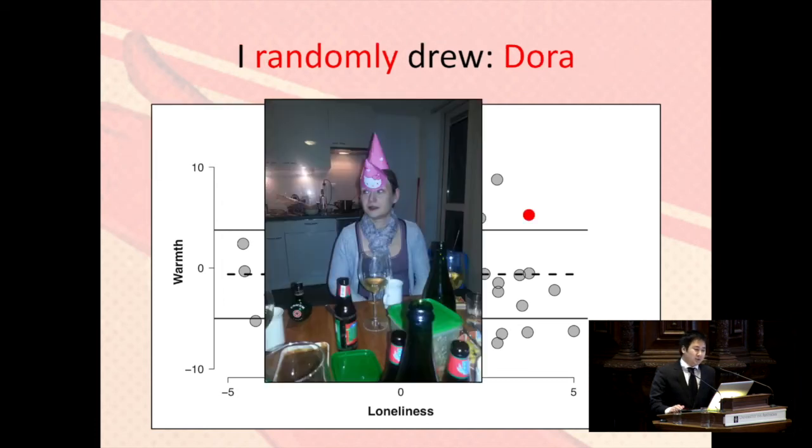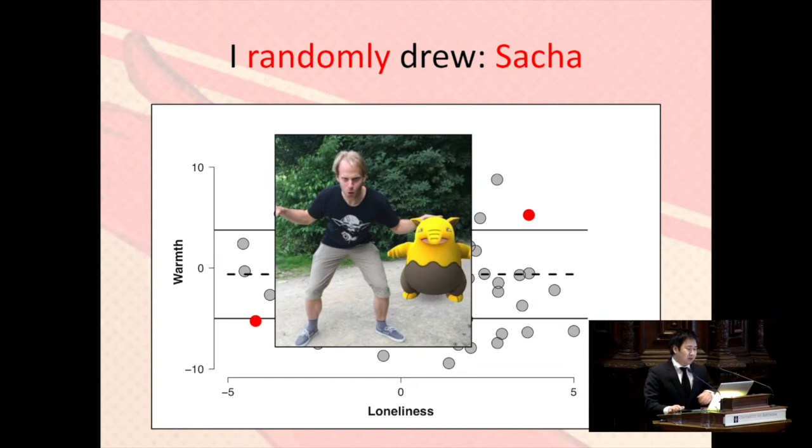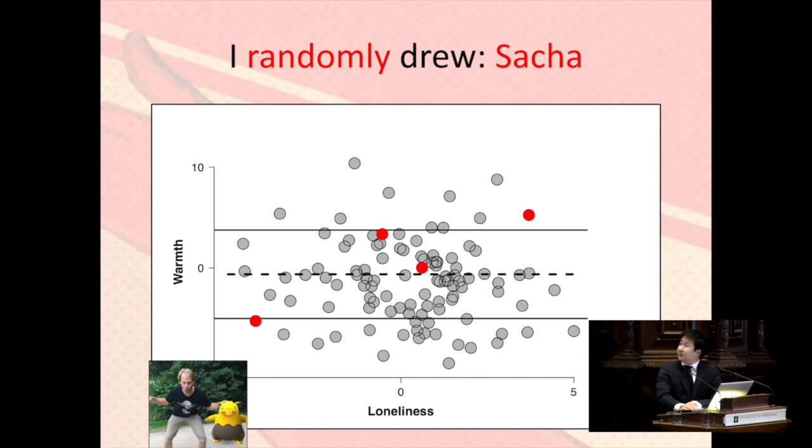Another one I draw is Dora. It's my paranymph, accidentally. And she is extremely smart and quite lonely because nobody understands her, and she showers quite warm. And we also have, accidentally, I draw Sasha. Sasha is also extremely smart, he's also an assistant professor. And we go to the gym together, he's not lonely at all. And we have to shower quite cold to cool our hot bodies. So as you can see, there it is.